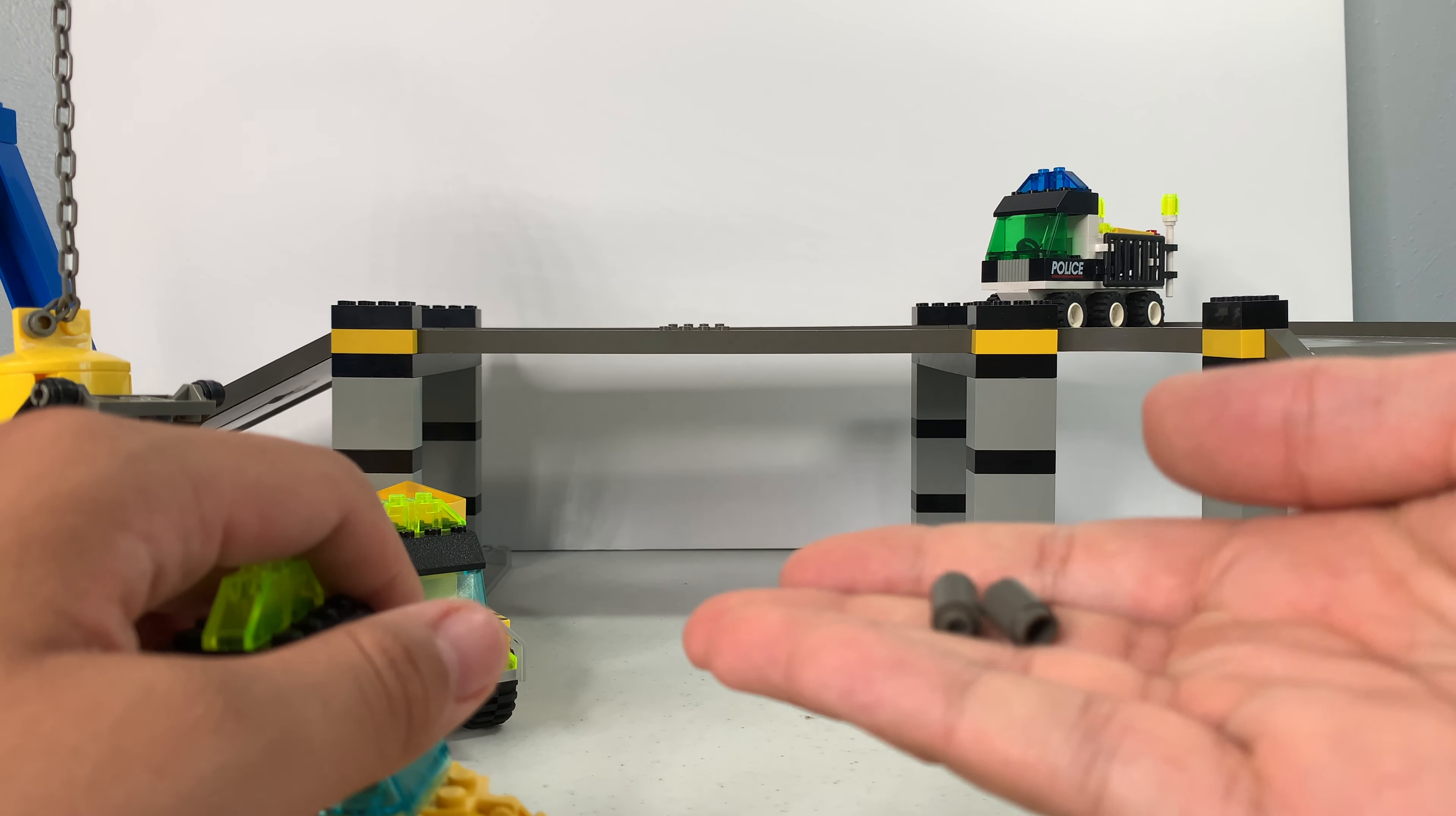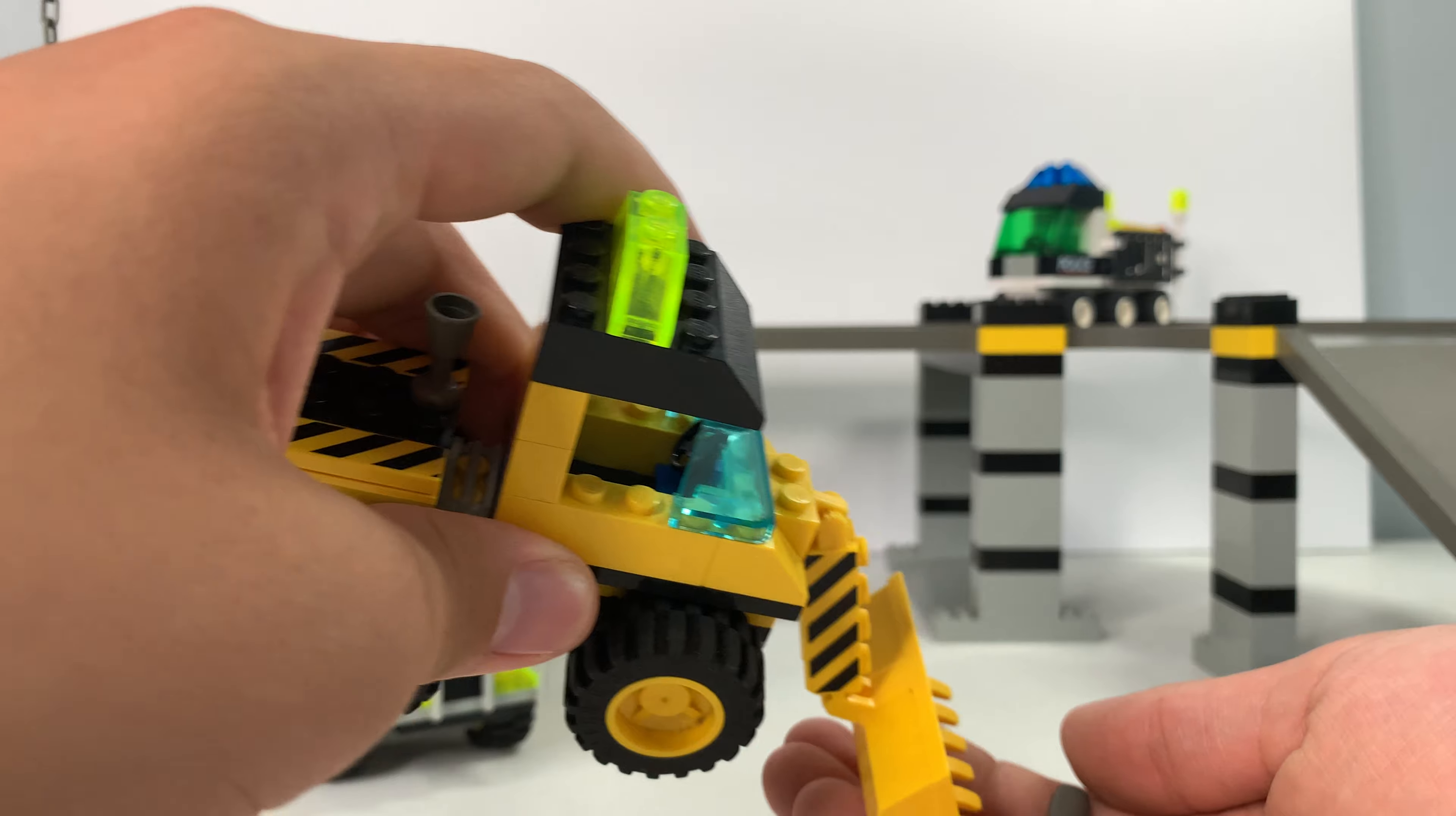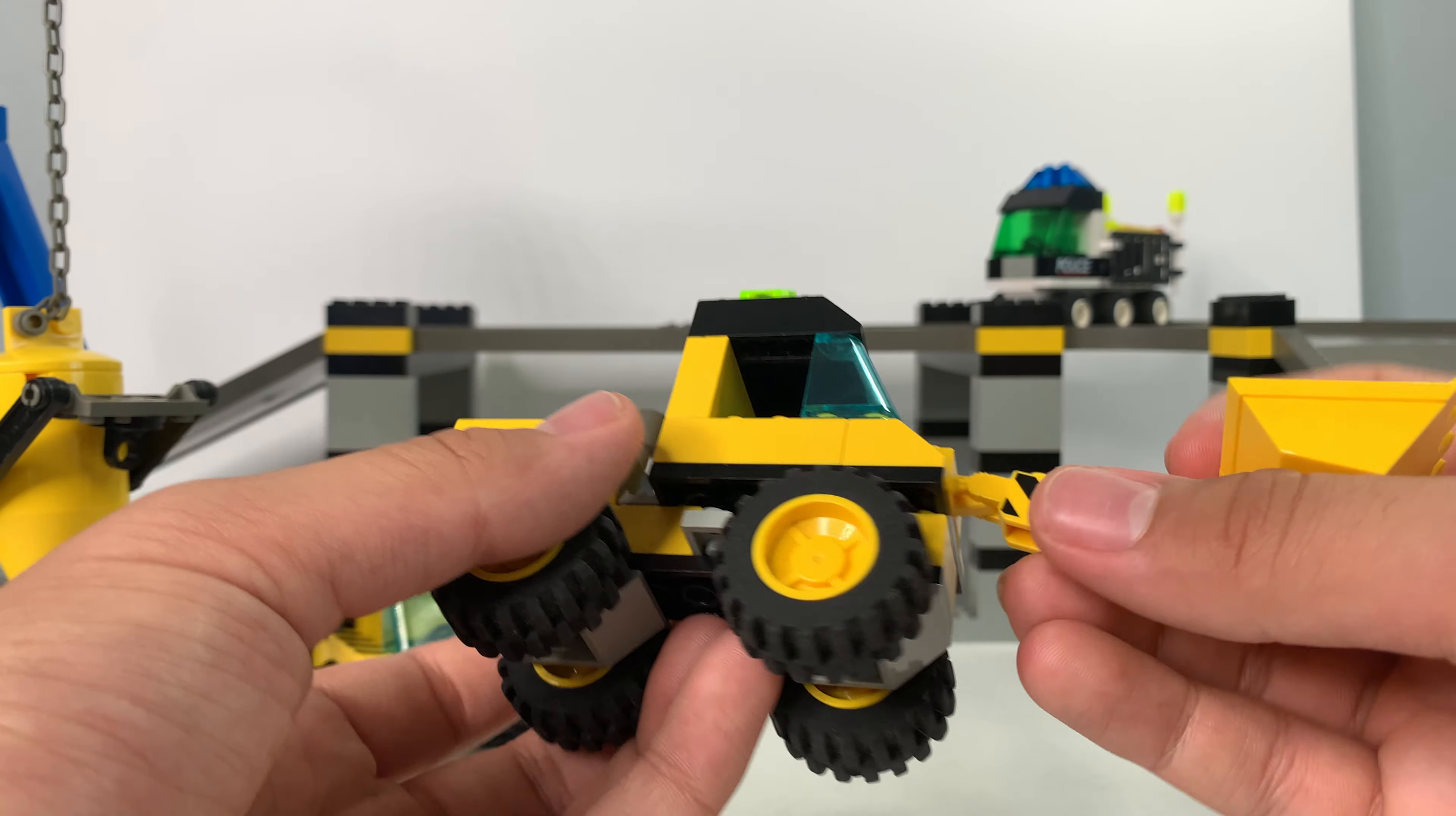This thing right here can go up and down and it can pick up little cement pieces or just regular rubble. You can put it in here. And there is a play feature with the crane but we'll get into that last. Very basic design. I mean for 2000, this is also Town before City, so for that year good design. For now though, this is very basic.